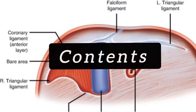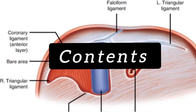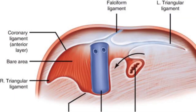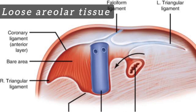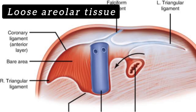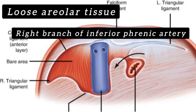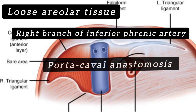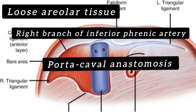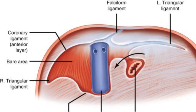The contents of this area are loose irregular connective tissue, branches of the right phrenic artery, and also anastomosis of the portal vein and systemic vein, called portacaval anastomosis.